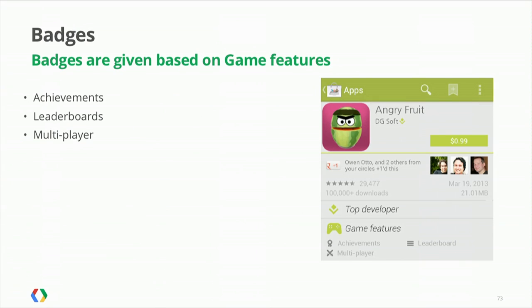Once you are published, we have a nice treat in store: as you get more users, you will get badges. You unlock achievements of your own — a leaderboard badge, an achievement badge, and a multiplayer badge if you use all three — displayed right in the Play Store so your app stands out. However, they're not given out just because you configured those features; we look at how much each feature is actually being used. When we reach a certain usage threshold, we give you a badge, so you have to actually integrate it meaningfully.